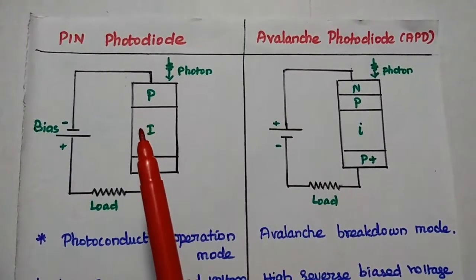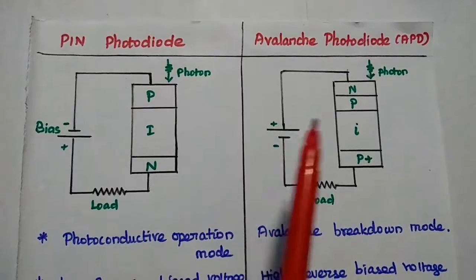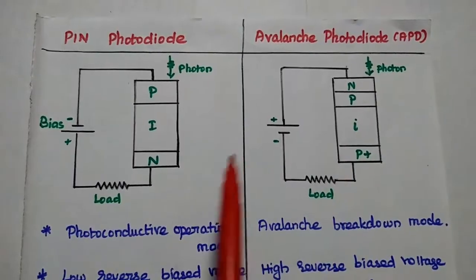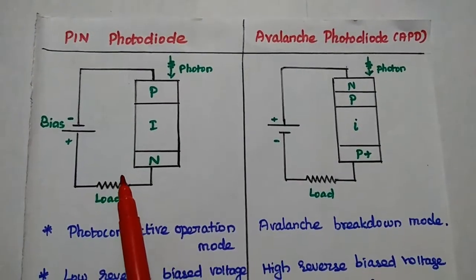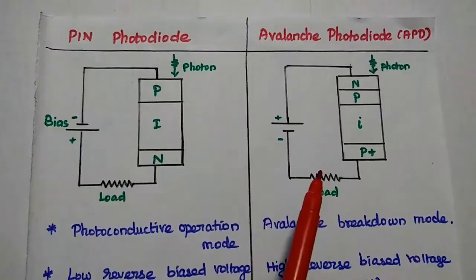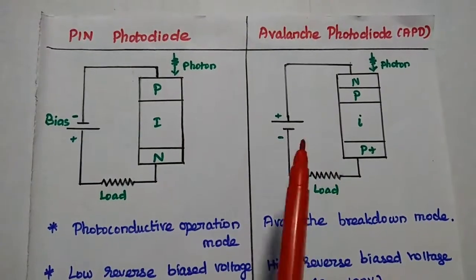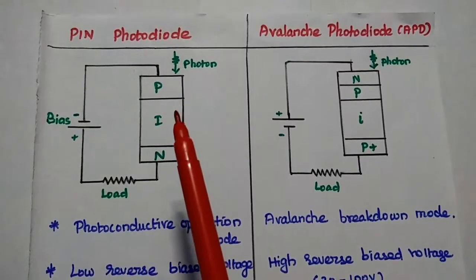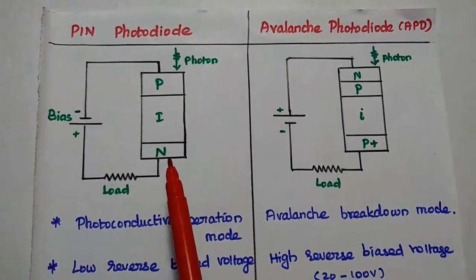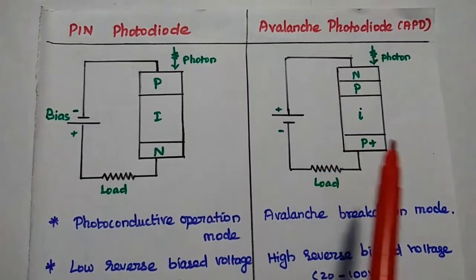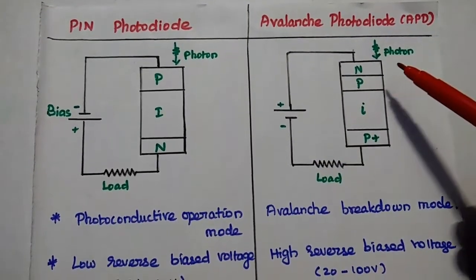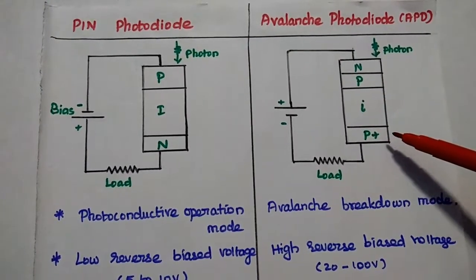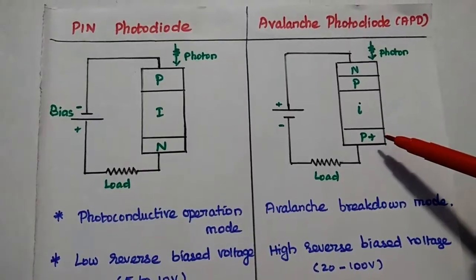Next, the comparison of PIN photodiode and avalanche photodiode. Avalanche photodiode is simply called APD. This is the structure of PIN photodiode. This is the structure of avalanche photodiode. It is a 3-layer electronic device. It has P layer, intrinsic layer, and N type layer. Avalanche photodetector is a 4-layer diode. It has N layer, P layer, intrinsic layer, and P plus type, so that is highly positive.